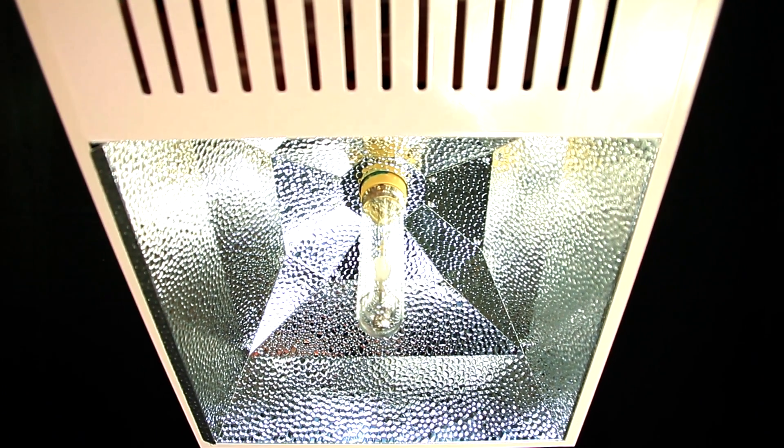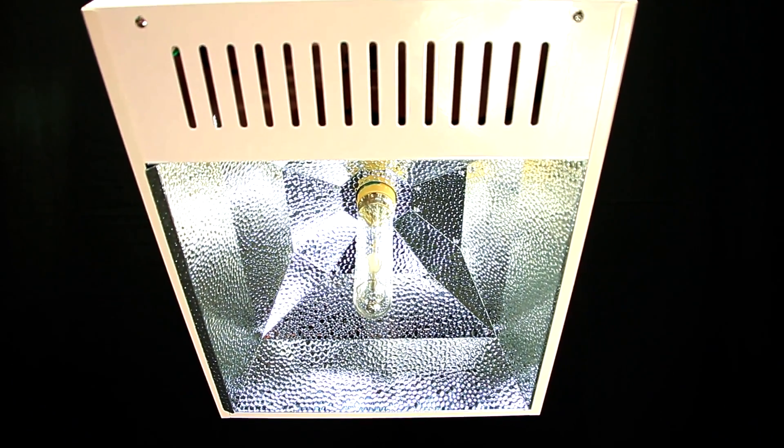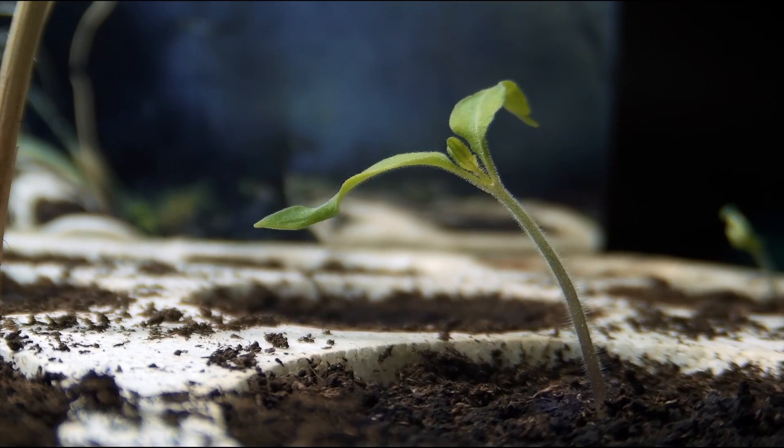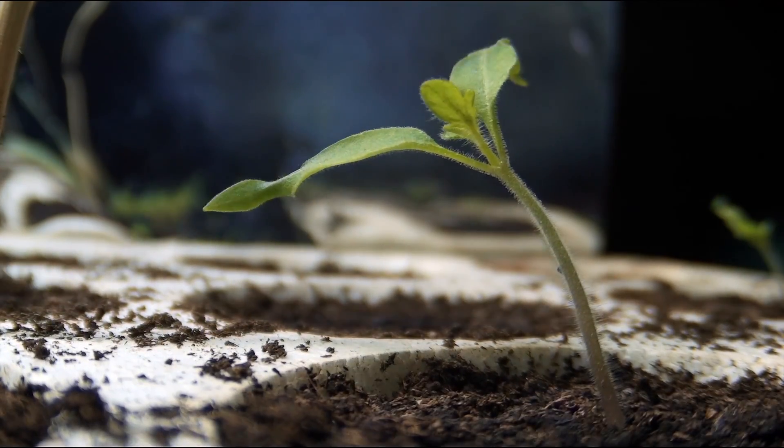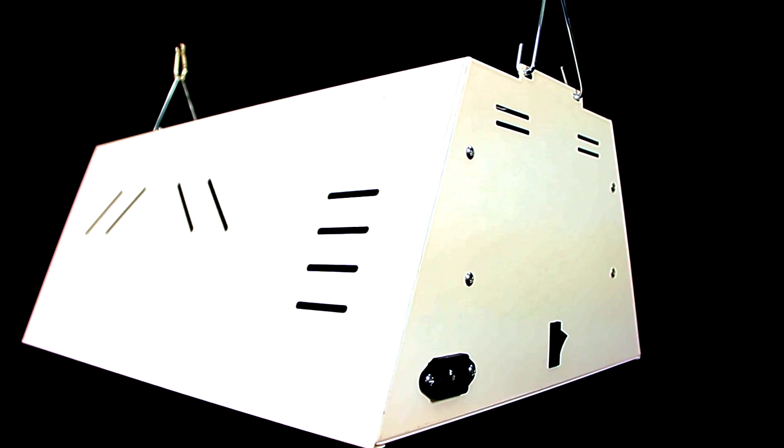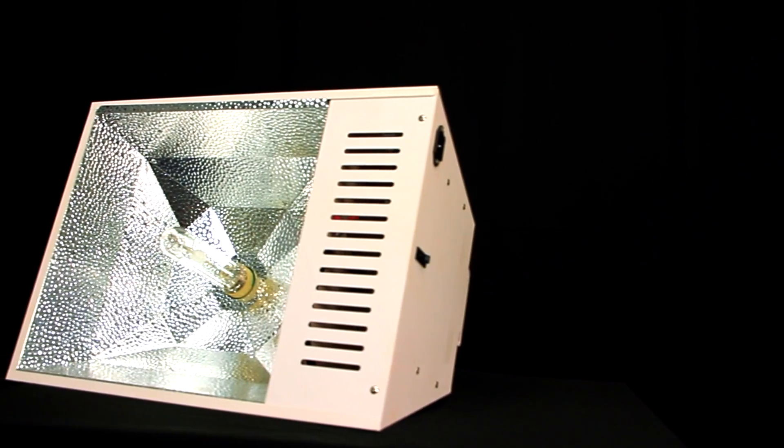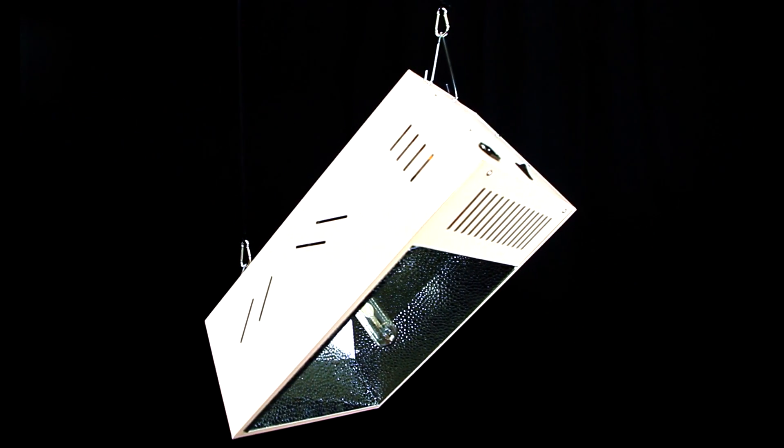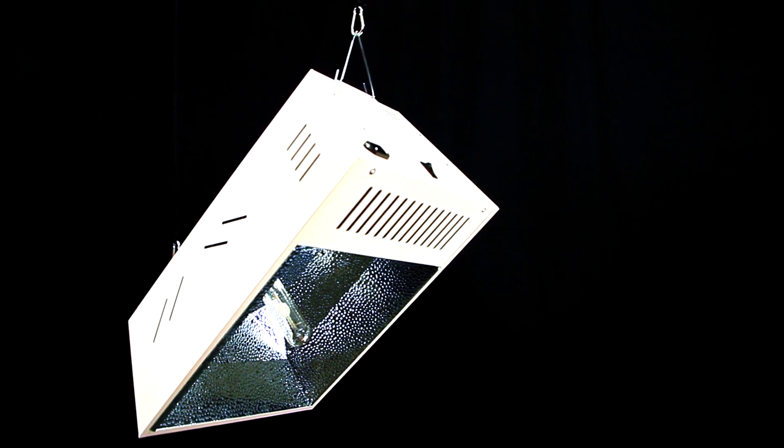This is the Eclipse CMH grow light system. It makes the flourishing in your grow room better, faster, and more powerful. All-white finish with 98% reflective German aluminum highlights its seamless design. State-of-the-art ceramic metal halide technology like you've never seen before.